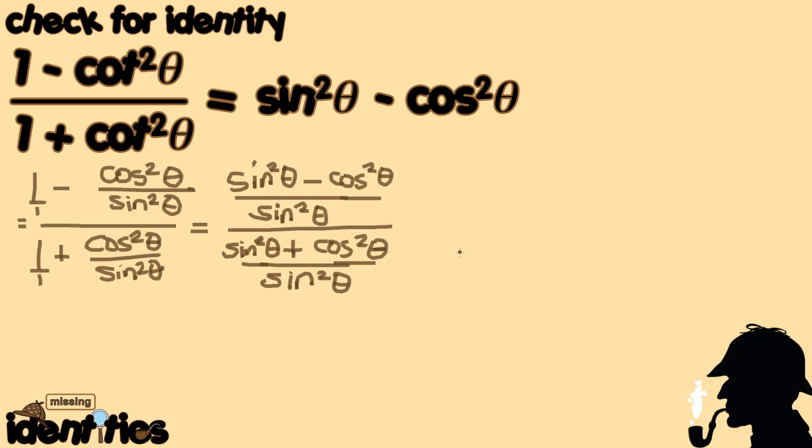A portion of this expression is already similar to the right-hand side — sine squared theta minus cosine squared theta in the numerator is our goal. And sine squared theta plus cosine squared theta in the denominator is just equal to 1 by the Pythagorean identity mentioned earlier. But let's proceed through the next steps formally without substituting 1 just yet, for the purpose of discussion.